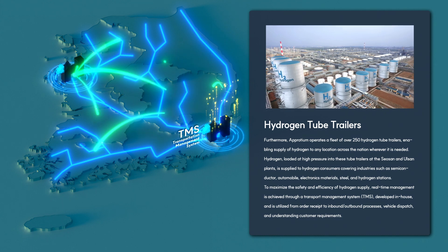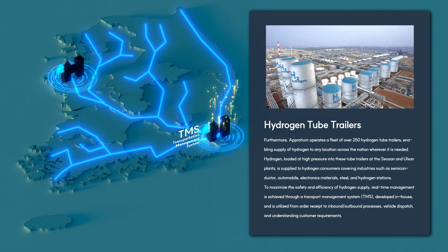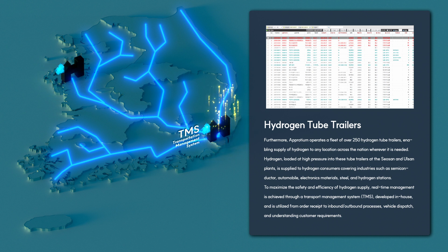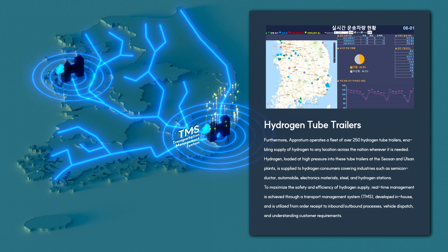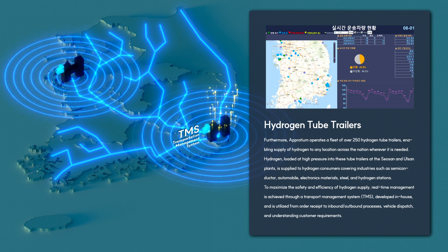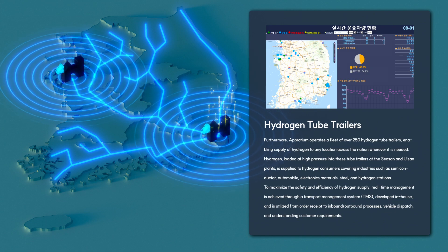To maximize the safety and efficiency of hydrogen supply, real-time management is achieved through a transport management system developed in-house and utilized from order receipt to inbound-outbound processes, vehicle dispatch, and understanding customer requirements.